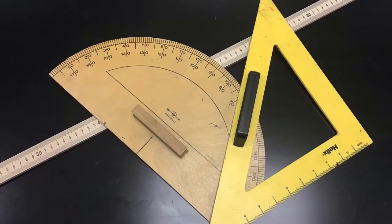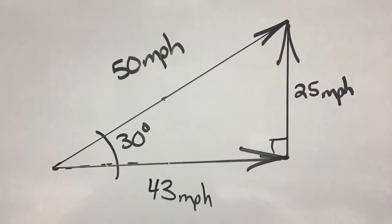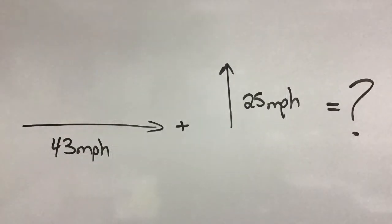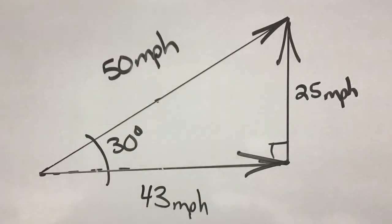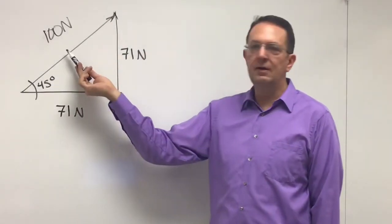You can also draw this thing to scale using your tools. Same values, 43 miles an hour east, 25 miles an hour north. And a corollary. We ask, what is the sum of 43 miles an hour east and 25 miles an hour north? Of course, it is 50 miles an hour and 30 degrees north of east. If you put it back together, you get the original.